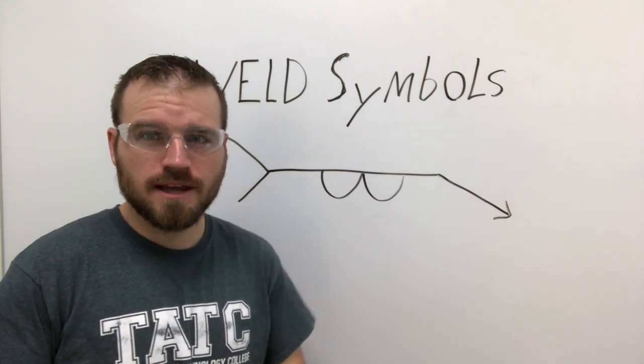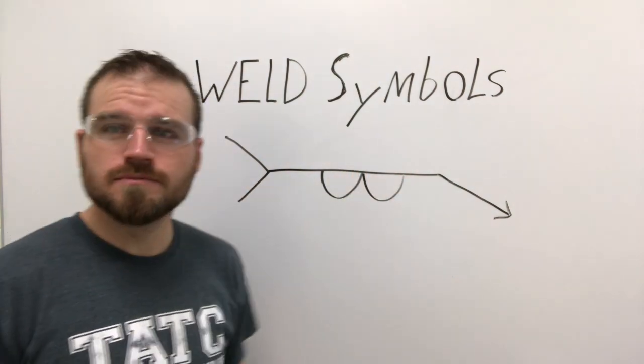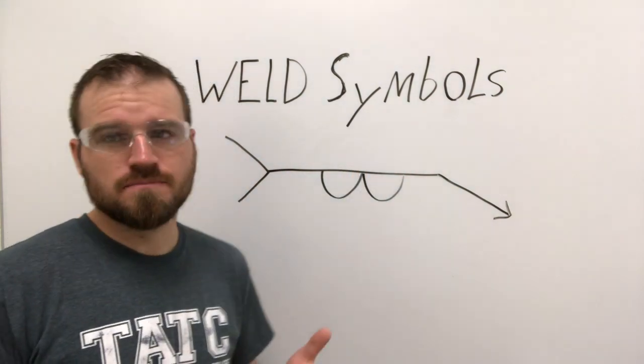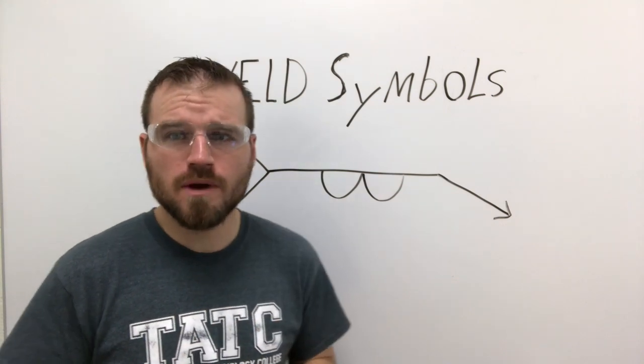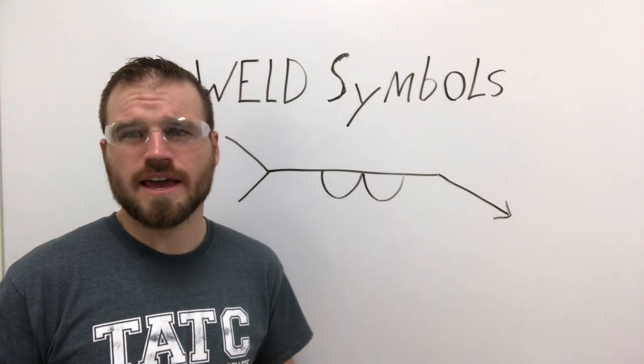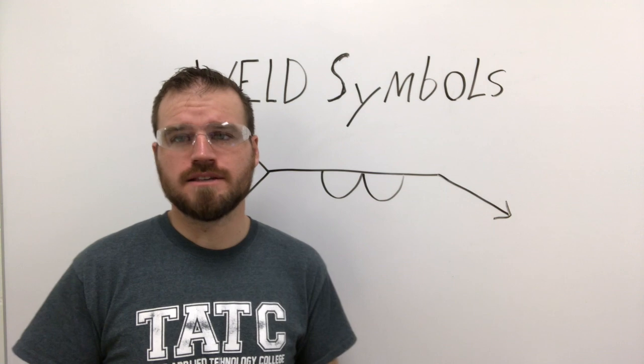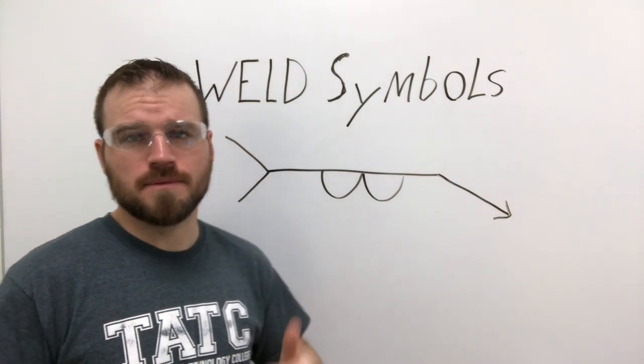Hey guys, in this lecture I'd like to go over some weld symbols. Weld symbols are found on blueprints to indicate where welds should be going, what they should look like, and how it's going to work.